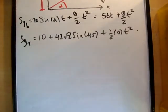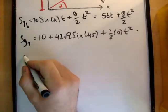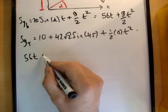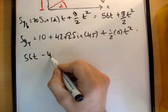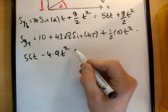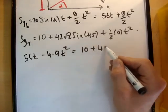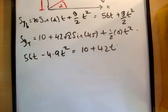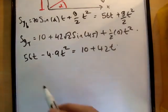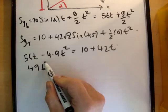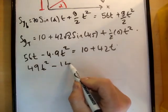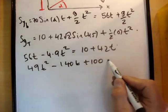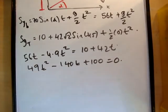So of course, when the two particles hit each other, the intercept, s sub y of the bullet is equal to s sub y of the target. So let them equal. And if you do that, you'll get the following. You'll get 56t minus 4.9t squared, and that will be equal to 10 plus 42t. Remember, sine of 45 is 1 over root 2. So let's just rearrange that. So we get 49t squared minus 140t plus 100 is equal to 0.